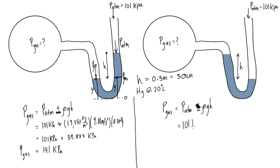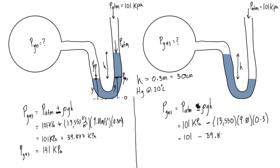So P_gas = 101 kPa minus 13,550 × 9.81 × 0.3 m, using the same fluid, height, and temperature as before. That gives us 101 minus 39.877, which rounds to P_gas ≈ 61 kPa. This is less than 101 kPa, which makes sense.